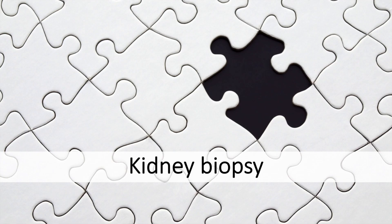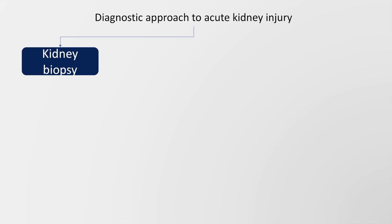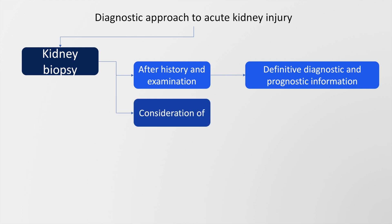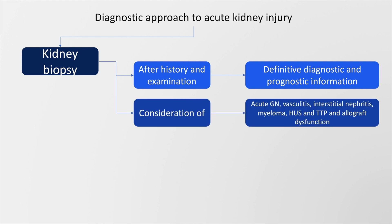A kidney biopsy is an important part of the diagnostic evaluation of acute kidney injury. After history and clinical examination, we can get valuable definitive diagnostic and prognostic information from the biopsy report. During a kidney biopsy, we must consider diagnoses such as acute glomerulonephritis, vasculitis, interstitial nephritis, myeloma, hemolytic uremic syndrome, and allograft dysfunction.